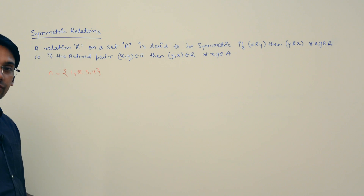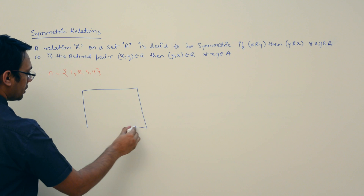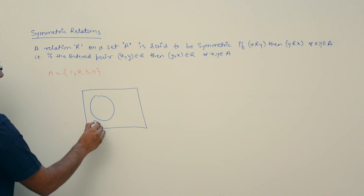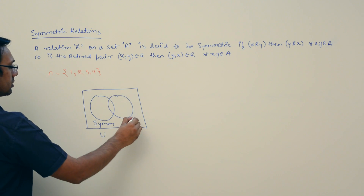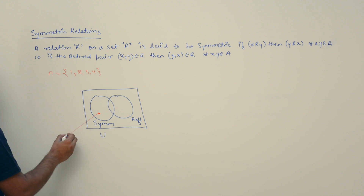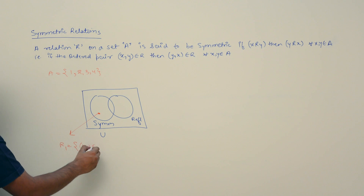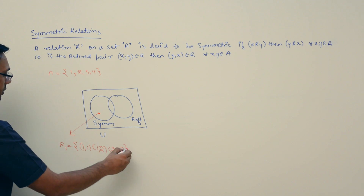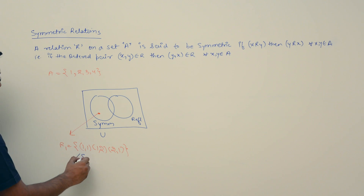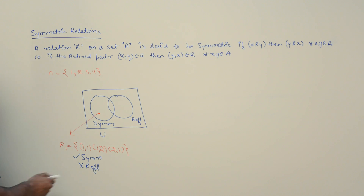Now let us look at the relationship between symmetric and reflexive relations using a Venn diagram. This is the universal set. This circle represents relations which are symmetric, and another circle represents relations which are reflexive. For a relation that is symmetric but not reflexive, consider R1 = {(1,1), (1,2), (2,1)} — it is symmetric but not reflexive.